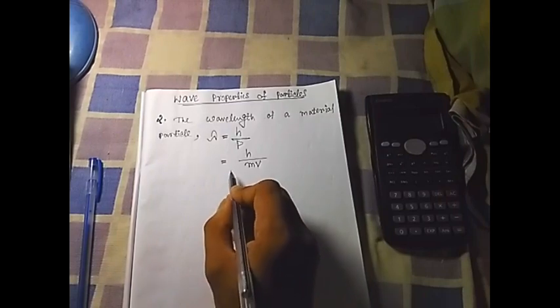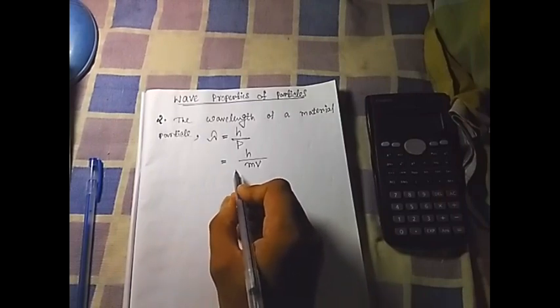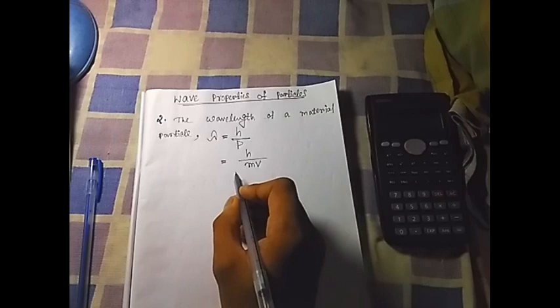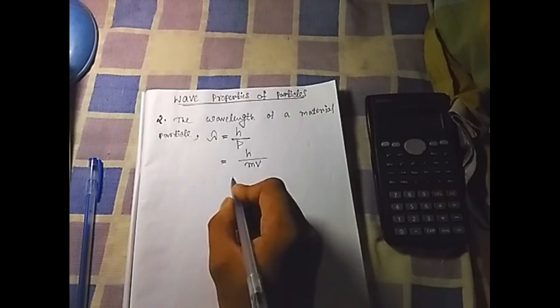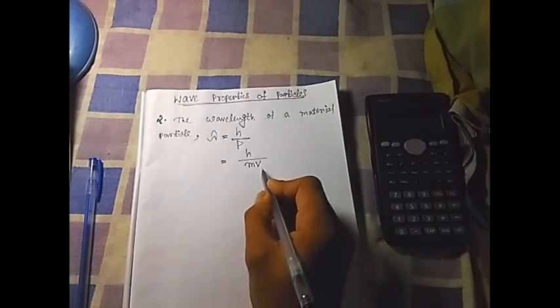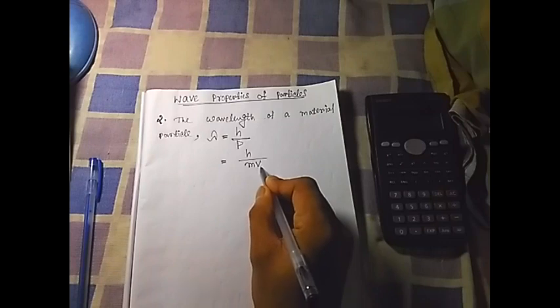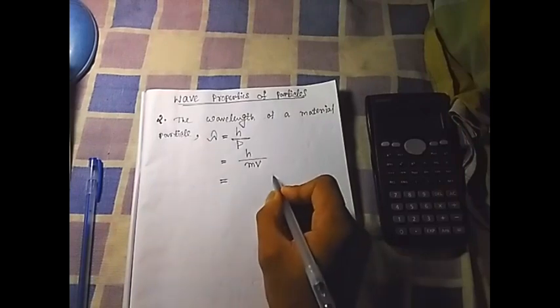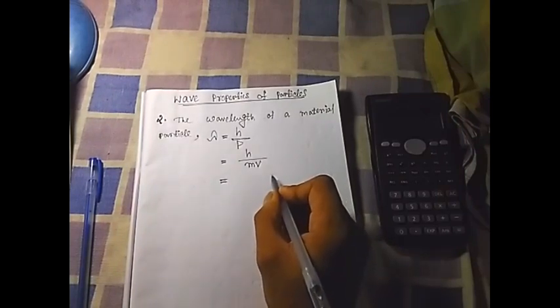In this case, the speed is nearly the speed of light. Problem one says it is 1.0 times 10 to the power 8 meters per second, so we can't just use the simple formula for velocity. We need the relativistic formula of momentum.